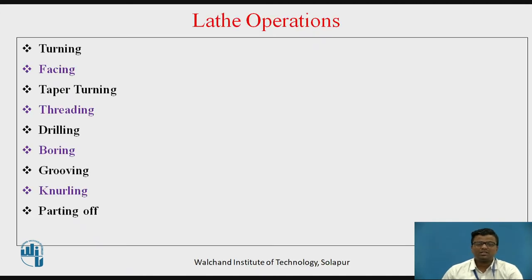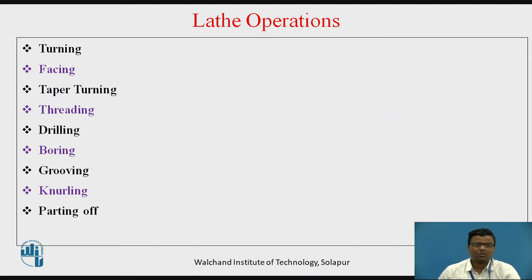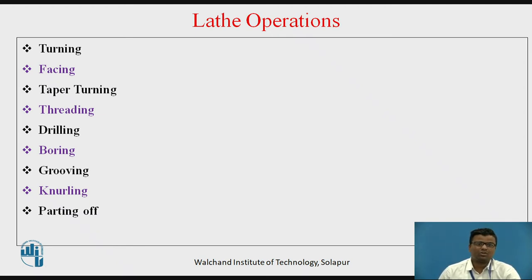Now in this session our main objective is to learn the different lathe operations. You can see the list: turning operation, facing operation — these are the very basic operations — taper turning operation, threading operation, drilling and boring, grooving, knurling, and parting off. Parting off is the last operation.